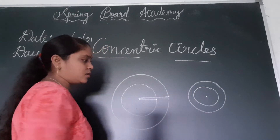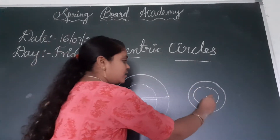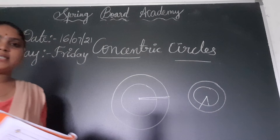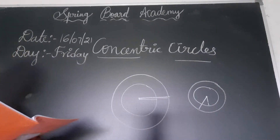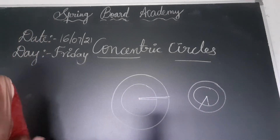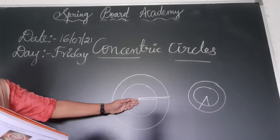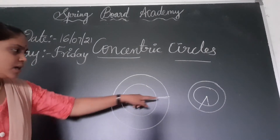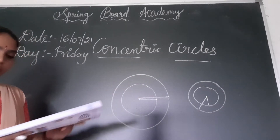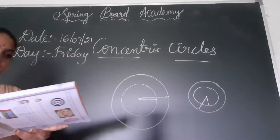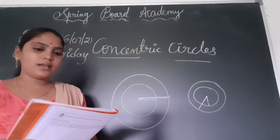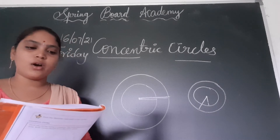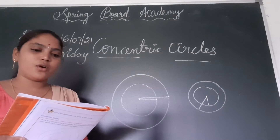Everyone draw this circle. Do these two circles meet at any point? No. You have to check the definition on page number 18: circles with same center and different radius are called concentric circles. Some examples of concentric circles are also given.